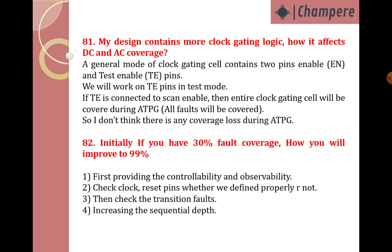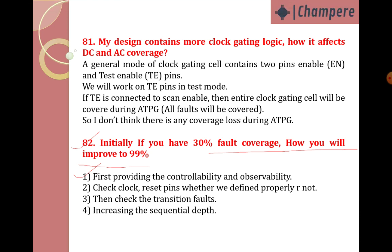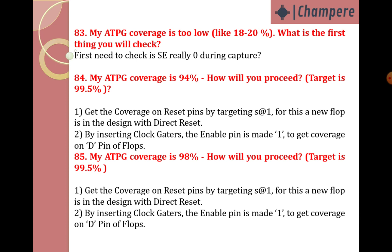If you initially have 30% fault coverage, how do you improve to 99%? First, provide controllability and observability. Check clock and reset pin definitions. Check transition faults, increase the sequential depth, and increase the abort limit according to the fault count.